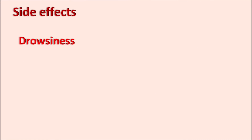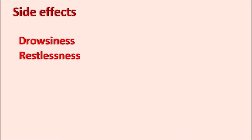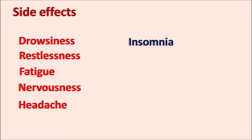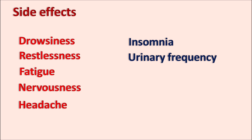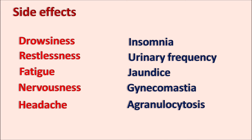The general side effects of metoclopramide include drowsiness, restlessness, fatigue, nervousness, and headache. It can also produce insomnia, urinary frequency, jaundice, gynecomastia, and agranulocytosis.